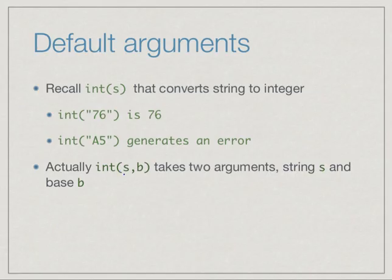Now it turns out that int is actually not a function of one argument but two arguments, and the second argument is the base. We give it a string and convert it to a number in base b, and if we don't provide b then by default b has value 10.